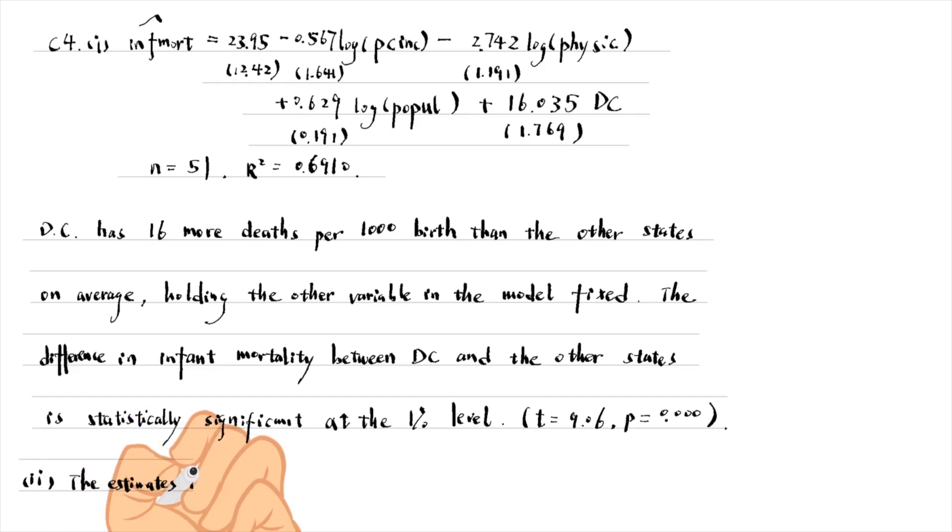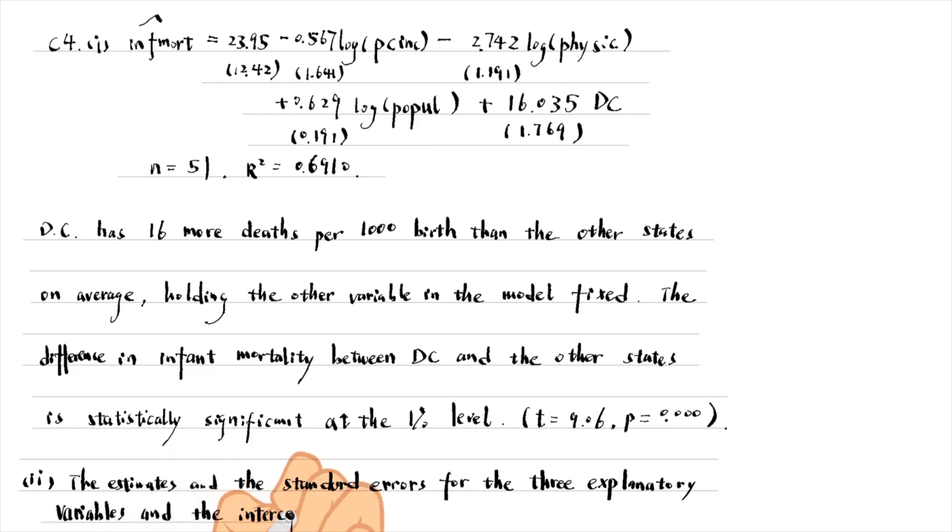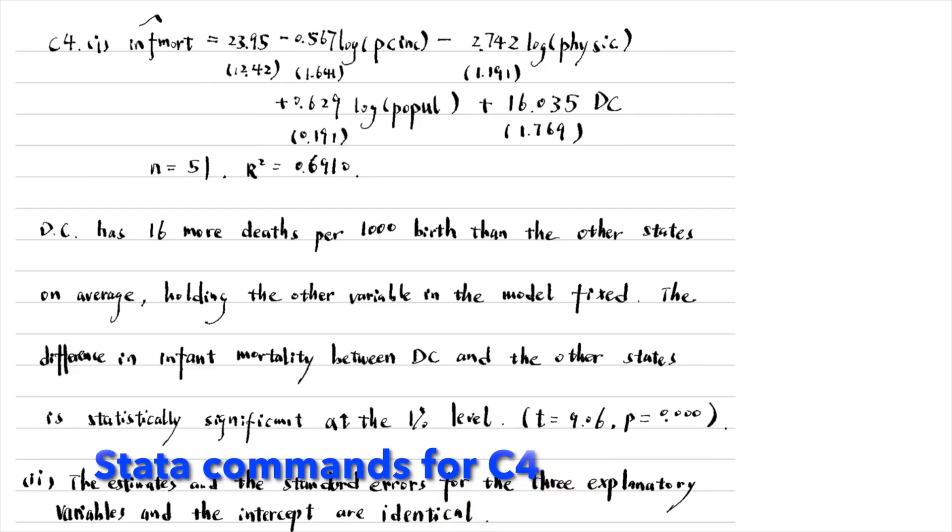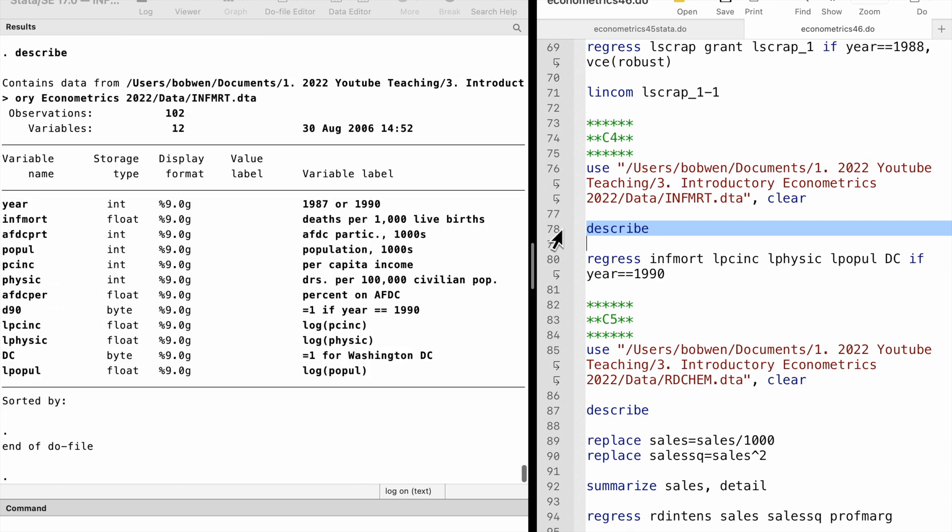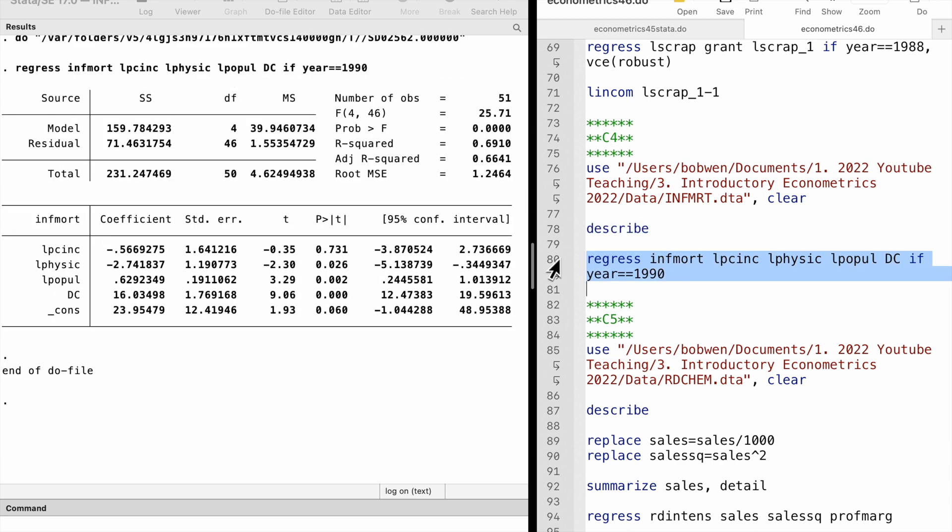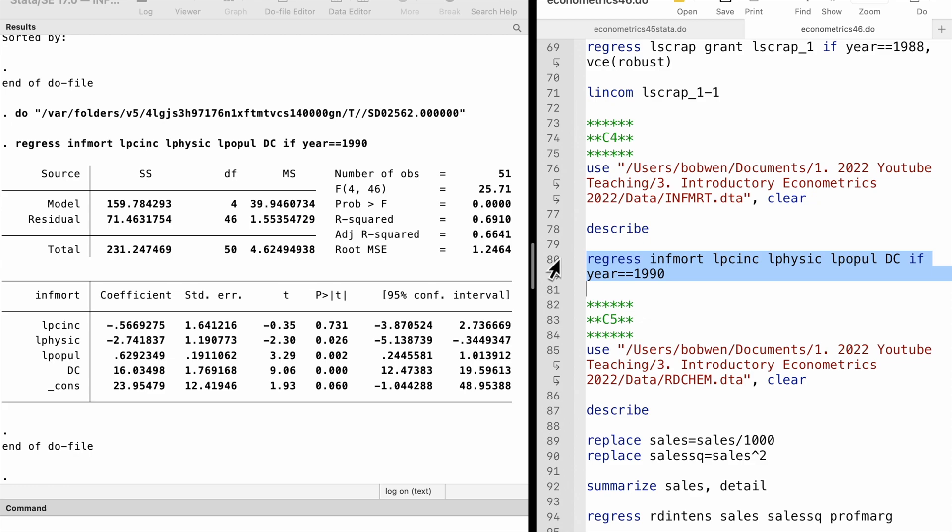The estimates and the standard errors for the three explanatory variables and the intercept are identical. Adding a dummy for one observation plays the same role as dropping that observation in estimation.